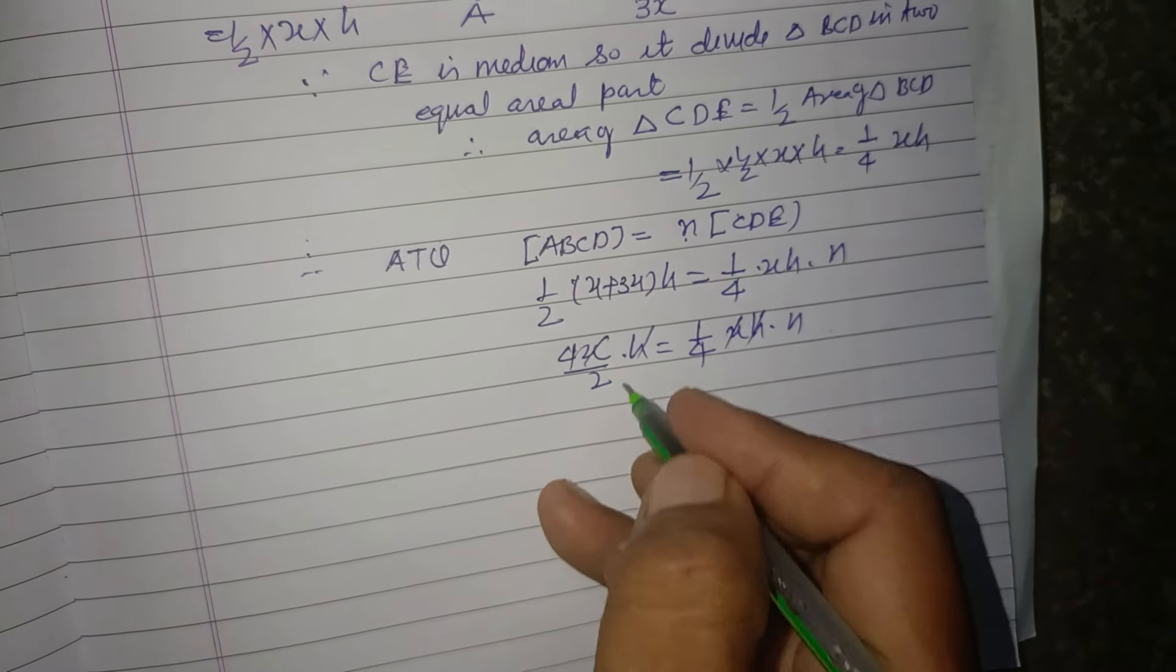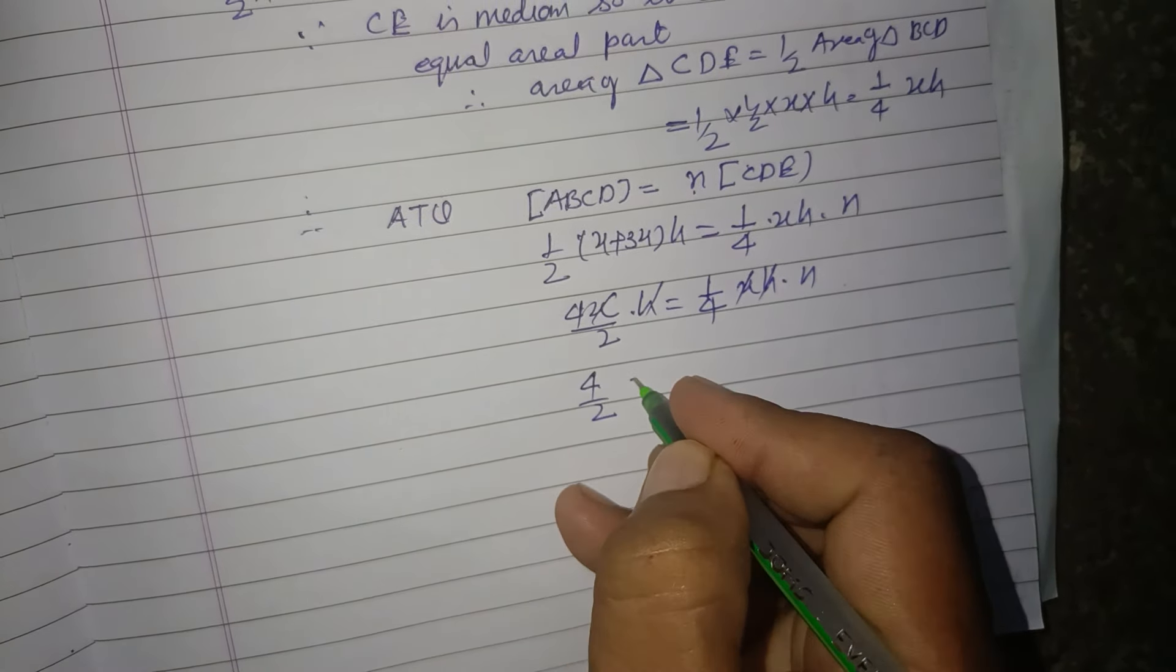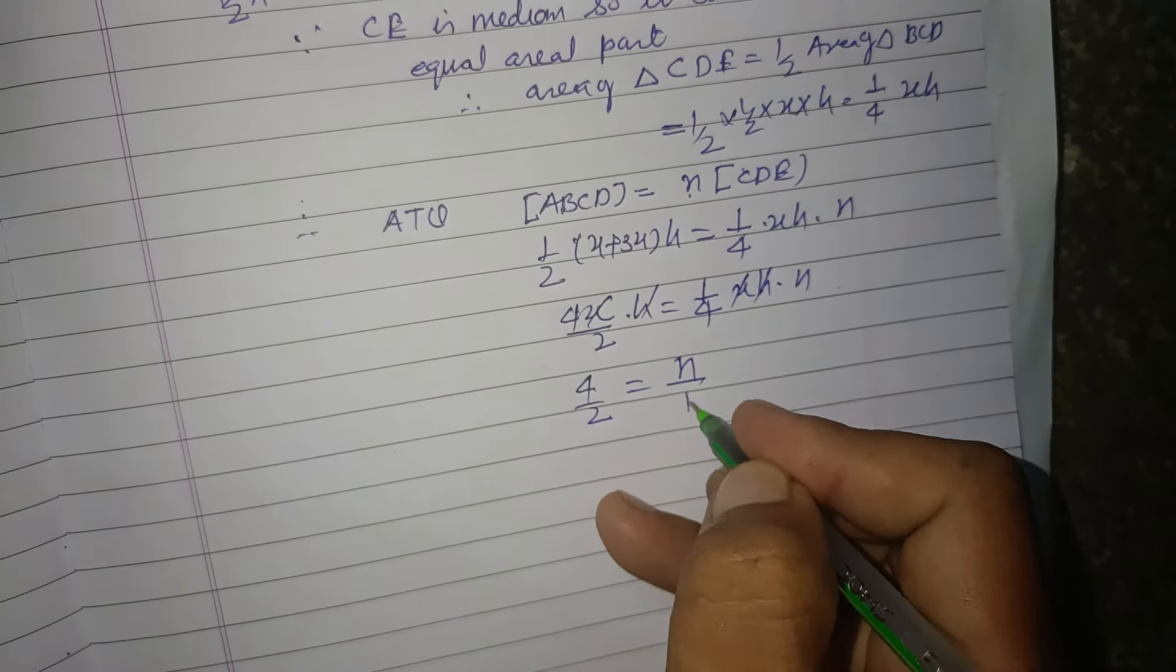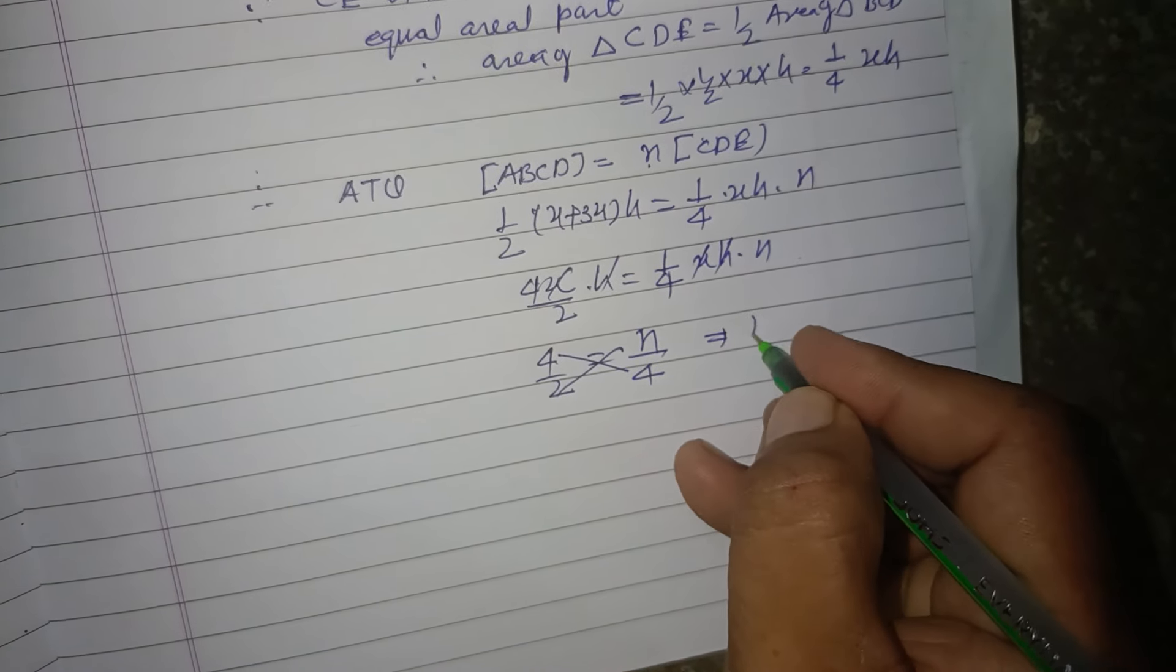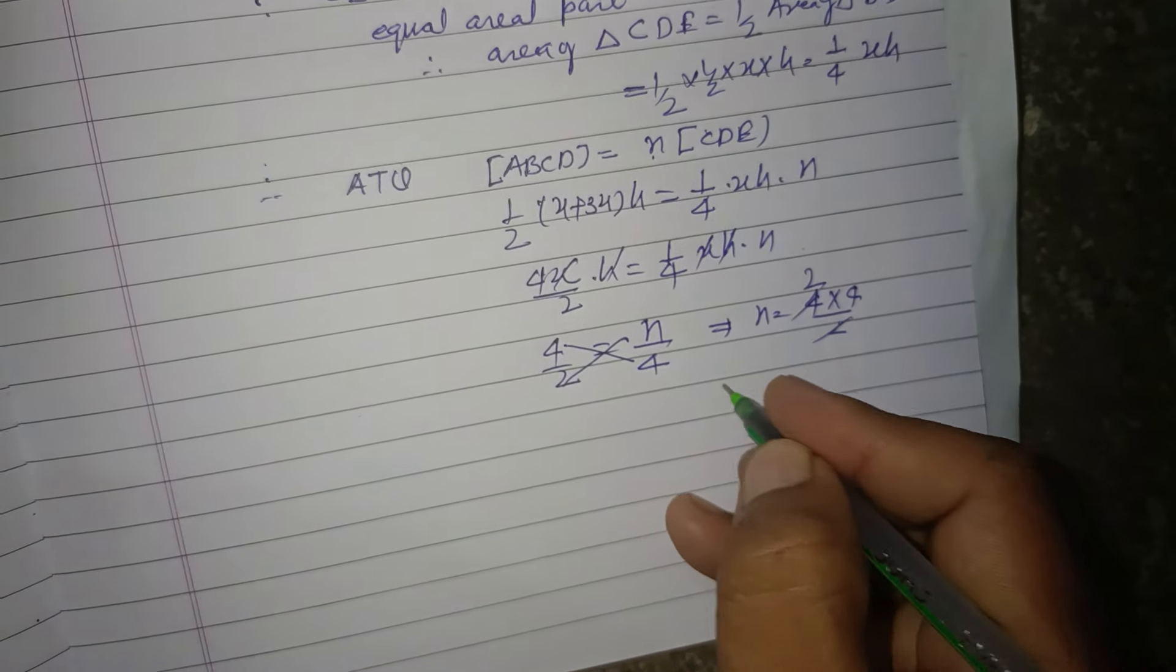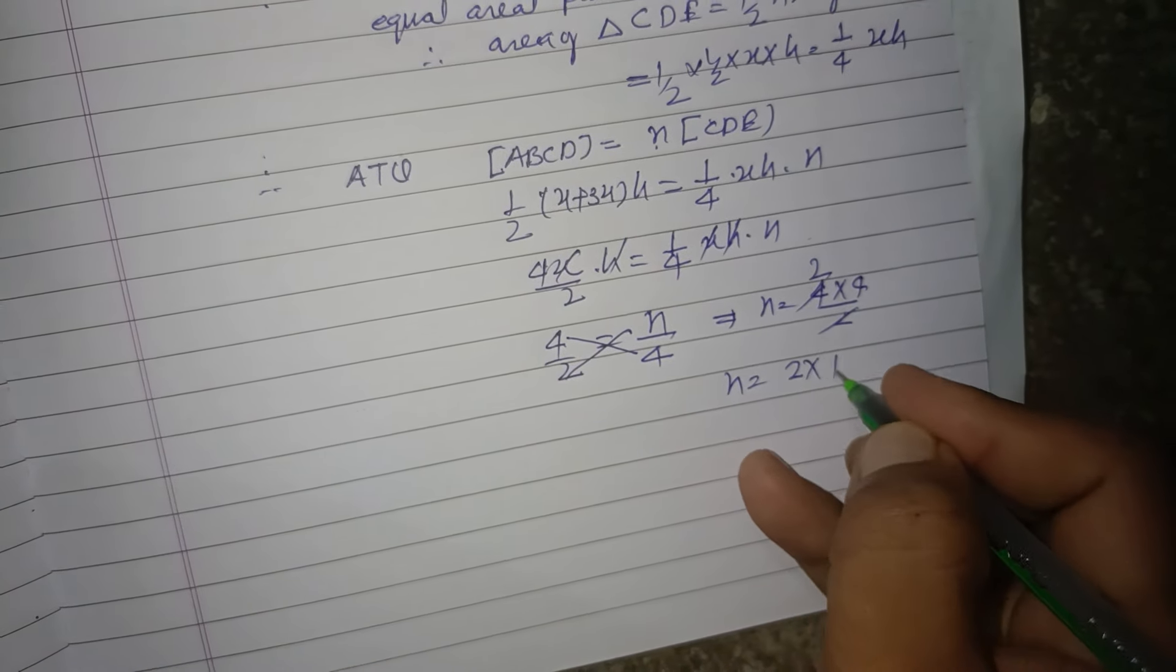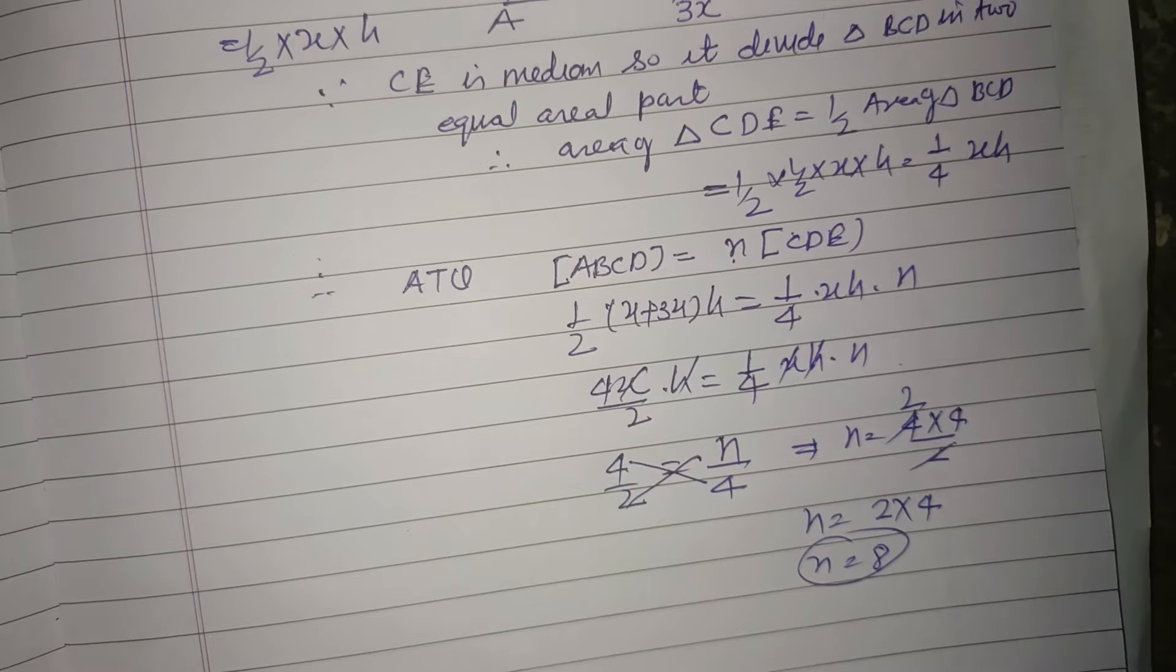So x, h cancel out. Here 4 by 2 equals n over 4. So on cross multiplication, we got n equals 4 into 4 by 2, which is 2 into 4, so n equals 8. So it is the correct answer of this question.